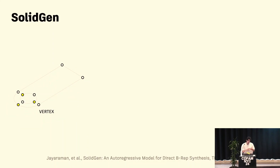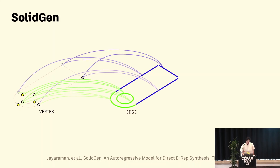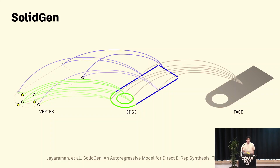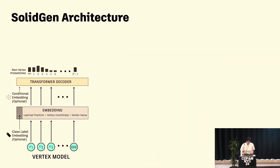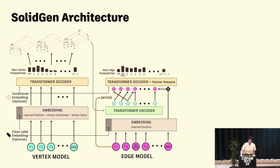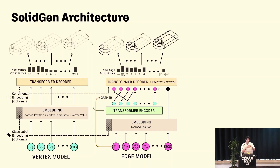A couple of years ago we published a paper called SolidGen — the first generative model that could directly generate B-rep shapes. It starts with a bunch of vertices and is essentially three different models working like a sewing process: the edge model picks vertices to sew together, then the face model picks edges to sew together. You have this hierarchy building up one by one. Looking at the architecture, it first predicts a series of points sequentially, then the edge model references those points to make edges, building up a wireframe.